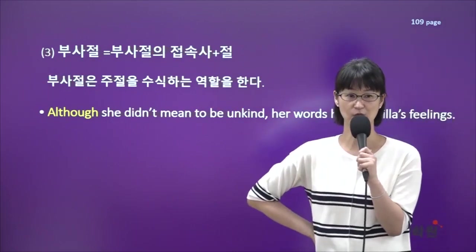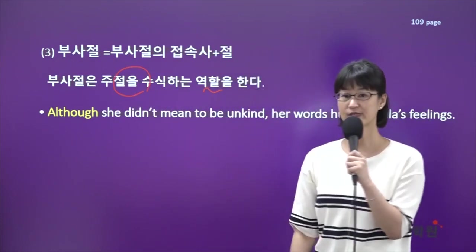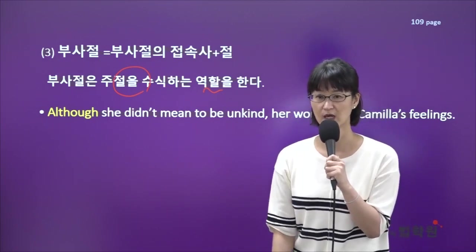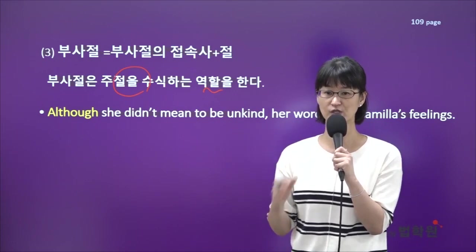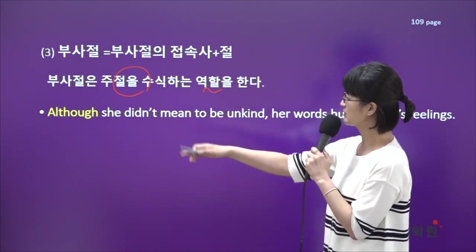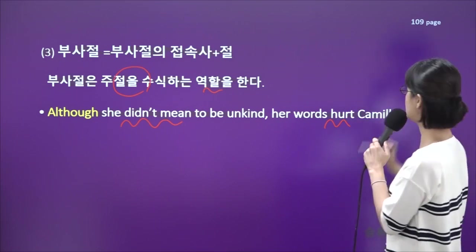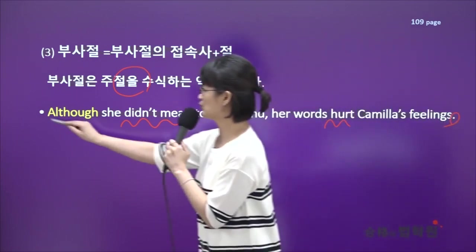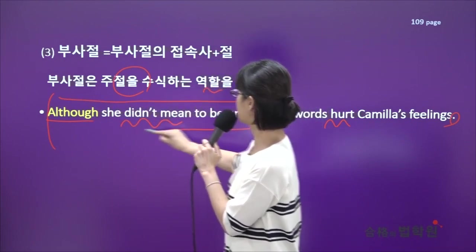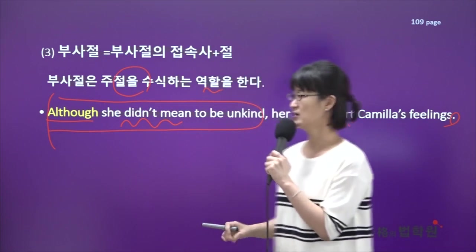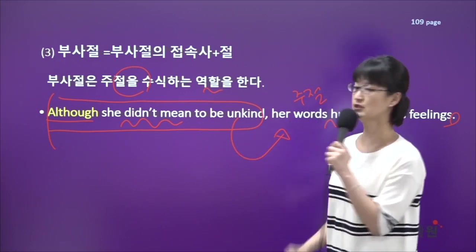부사절도 부사절의 접속사와 절이 한 덩어리로 묶인 형태겠죠. 부사절은 주절을 수식하는 역할을 한다고 했는데, 부사절의 접속사도 종속접속사 일종이니까 부사절의 접속사가 절과 결합이 되면 그건 종속절이고, 이 부사절의 접속사가 붙지 않은 절은 주절이 되겠죠. 일단 접속사이기 때문에 동사 하나, 동사 두 개, 동사 두 개를 마침표가 찍혀있는 한 문장 안에서 연결해주고 있고, 종속접속사의 종류이기 때문에 뒤에 있는 절과 한 덩어리로 묶여야 되는데 부사절은 묶기 더 쉬운 게 보통 부사절이 앞에 있을 땐 컴마가 있어요. 컴마까지 묶어주면 됩니다. 뒤에 있는 절은 주절이라 이 부사절은 주절을 수식해줍니다.